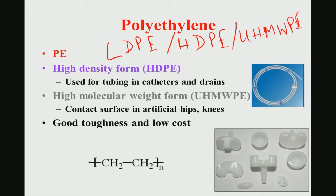The distinction between LDPE, HDPE, and UHMWPE is essentially based on molecular weight: going from LDPE to HDPE, molecular weight increases; going from HDPE to UHMWPE, molecular weight increases further. UHMWPE has larger biomedical applications such as in acetabular sockets in artificial hips and knee joints.